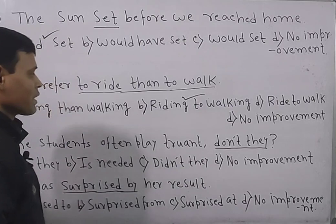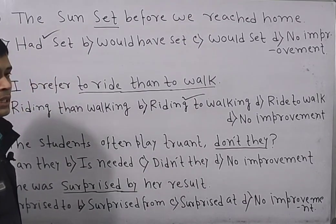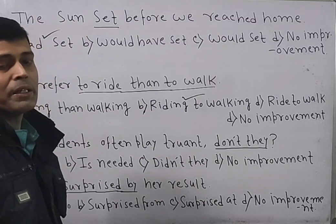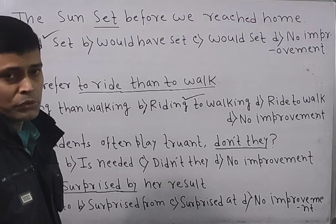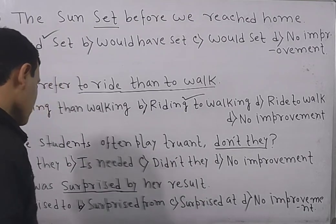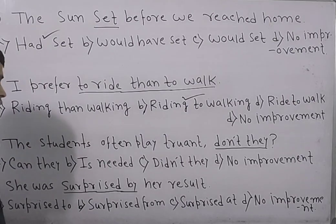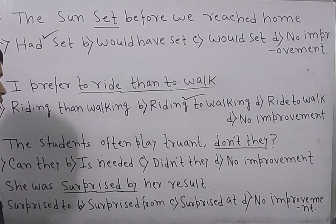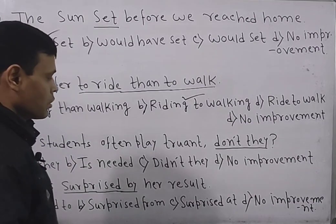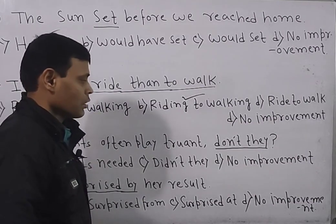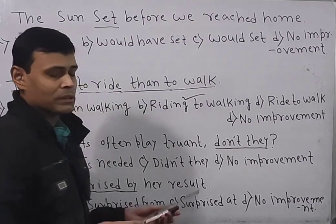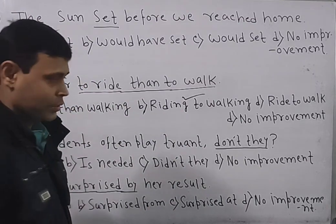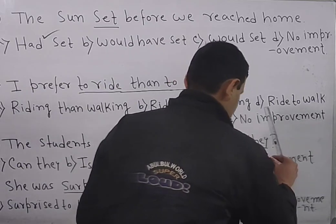We cannot say 'doesn't' because 'they' is the subject — 'they' is third person plural number. If it had been 'he,' we might have used 'doesn't.' Now looking through the options — 'can they,' 'is needed,' 'didn't' — there is no question of writing any of those. Rather, 'don't they' is already the correct and improved version. So this will be the answer.